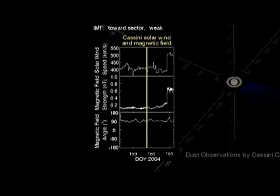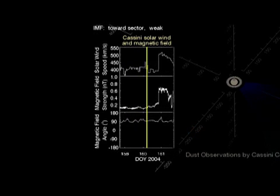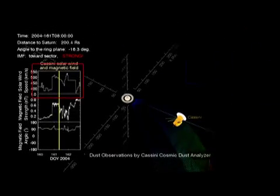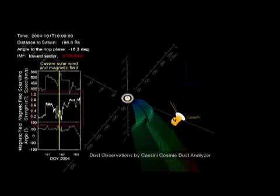Initially, the solar wind speed is variable but relatively low, and the field is weak. Soon, however, around day 161, the solar wind speed increases abruptly, and the magnetic field more than doubles.